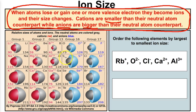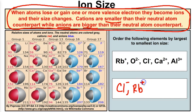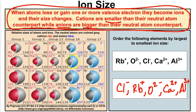Over here, a stable chlorine atom gains an electron and forms an anion, getting a little bit bigger. So if we're asked to order the following elements by largest to smallest ion size, chlorine is going to be our largest ion since it's a negatively charged ion. Rubidium's ion size is 166 pm, making it the next largest, followed by oxygen, then calcium, and finally aluminum as our smallest ion. Cations have a tendency to be smaller than their neutral atom counterpart, whereas anions have a tendency to be bigger.